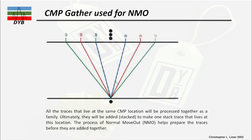To apply NMO corrections we use a CMP gather. Here is how we extract the CMP gather from the shot record. Let's say we have the first, second, and third shot. The CDP point is below and the CMP point is at the surface — the middle of the source-receiver distance. For each source-receiver pair we identify the midpoint, and with respect to this common midpoint we sort all of our data.